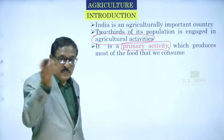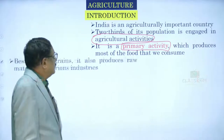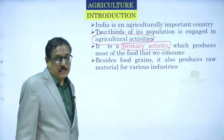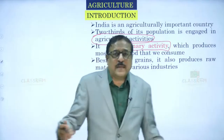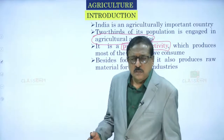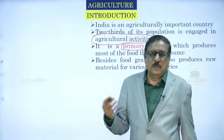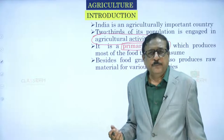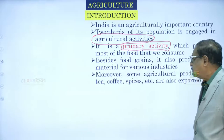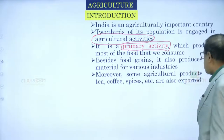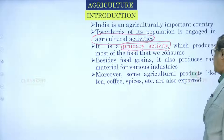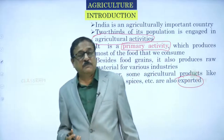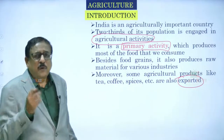Besides food grains, agriculture also produces raw material for various industries — cotton, jute bags, milk products like cheese, butter, yogurt, and many other products are all dependent on agriculture. Moreover, products like tea, coffee, and spices are also exported. Some of the coffee and tea produced in India is of the finest quality.